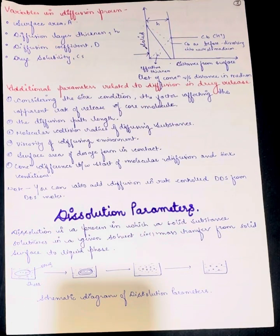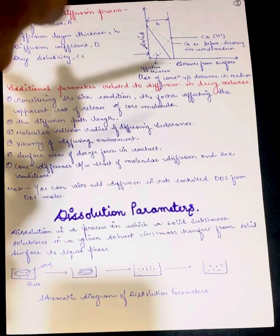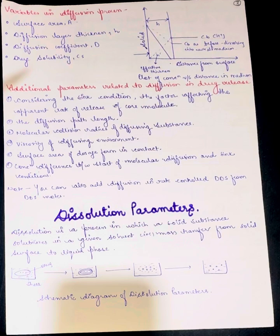Variables in diffusion process: we have surface area, diffusion layer thickness represented by h, diffusion coefficient by capital D, and drug solubility by Cs. This is the diagrammatical representation of it.